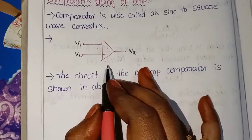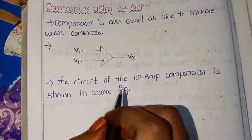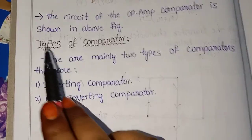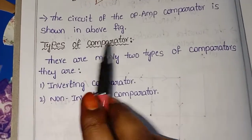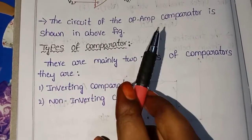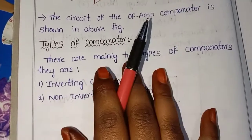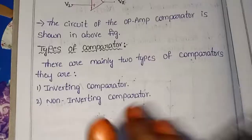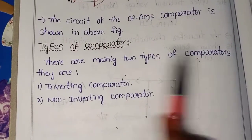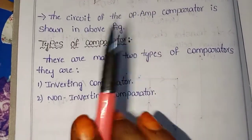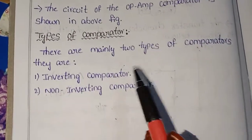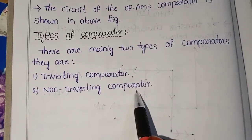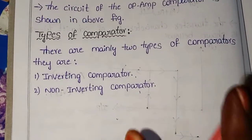There are types of comparators. There are mainly two types of comparators: inverting comparator and non-inverting comparator.